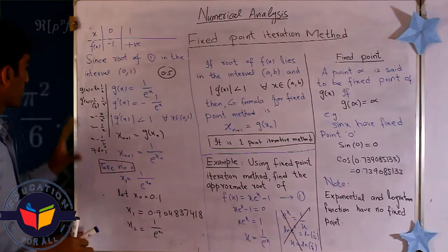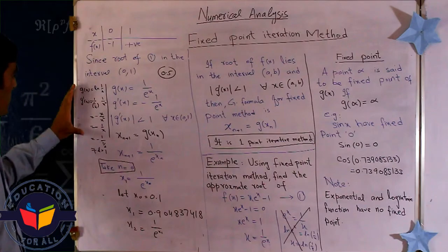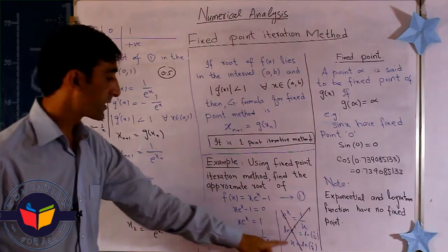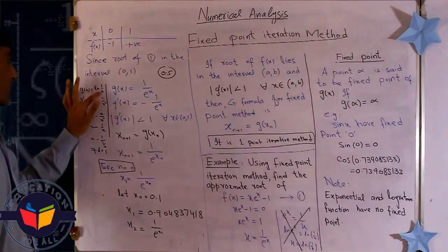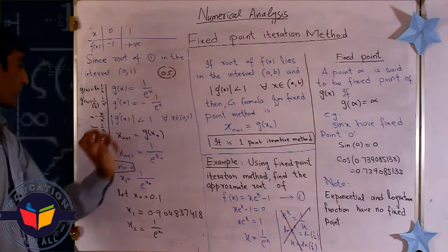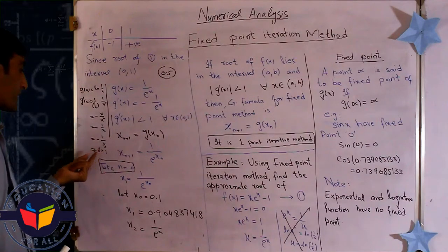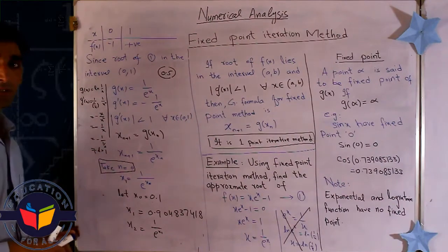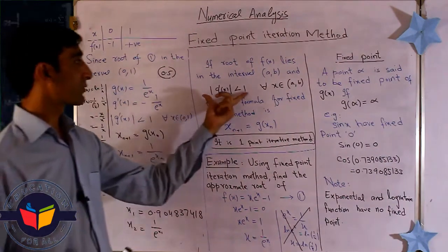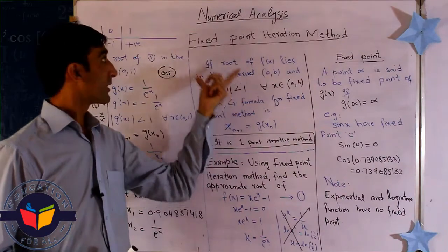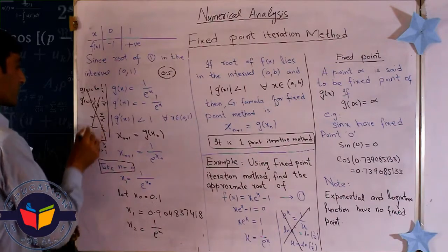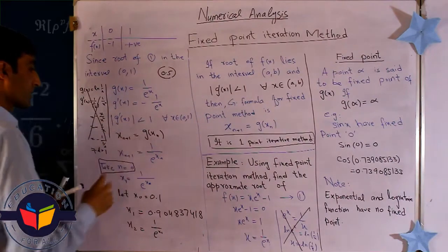You can verify this yourself: for g(x) = ln(1/x), taking the derivative and substituting 0.5 gives −2, with modulus greater than 1, so this is not a good choice. The function g(x) = 1/e^x is the best choice for the fixed point iteration method.